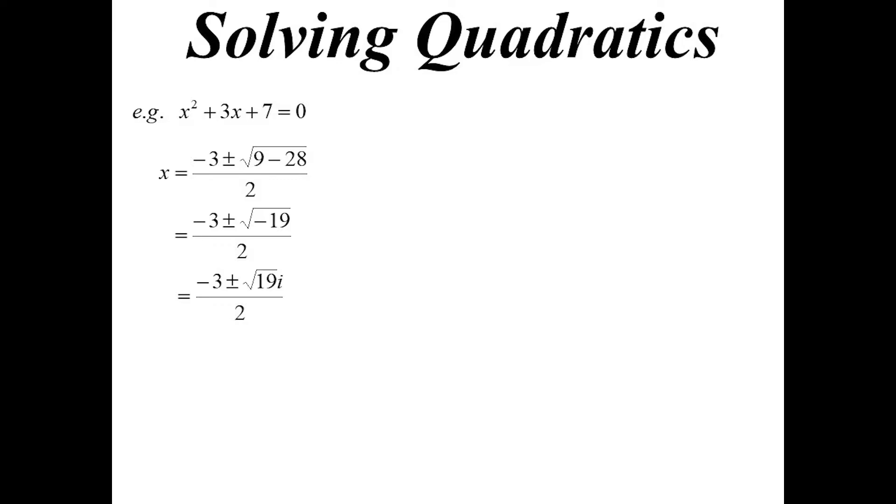When I'm handwriting square root signs, I always close my square root sign with a vertical line. So my two possibilities, negative 3 plus the square root of 19i on 2, and minus 3 minus root 19i on 2.